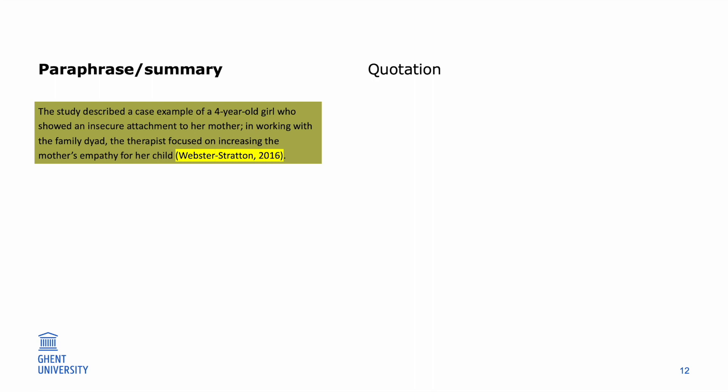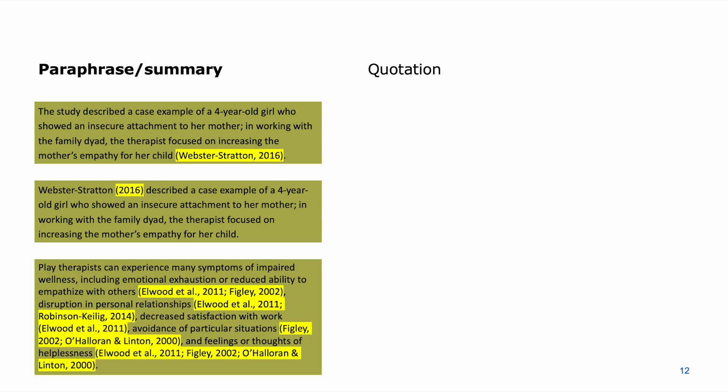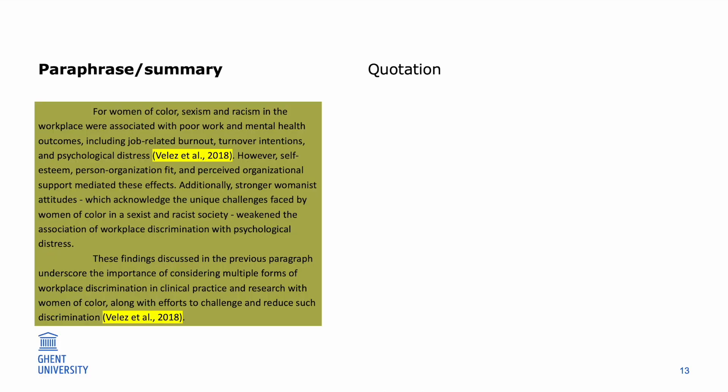When the reference falls at the end of a sentence, write the full stop after the reference. You can also include the author in the sentence and then place the year of publication in parentheses after the name of the author. When a paraphrase or summary consists of ideas from multiple sources, make sure it is clear which idea comes from which source by putting the correct in-text reference after each different idea. In case the paraphrase or summary continues in a new paragraph, you need to add the in-text reference again.